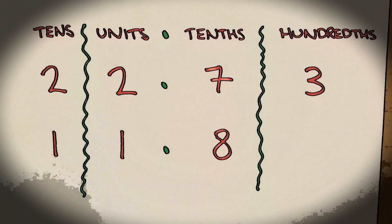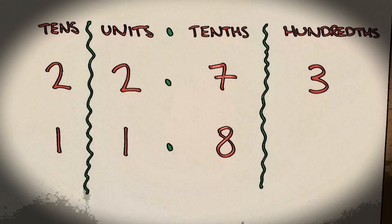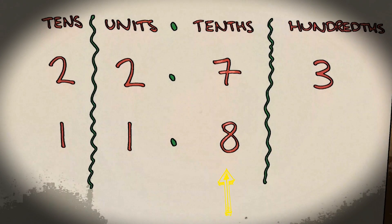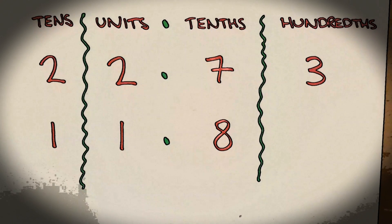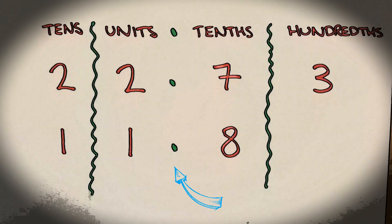It's really important you put the digits in the correct columns. Put the tenths in the tenths column and the hundredths in the hundredths column. Also remember that the decimal point stays in the same place in every row.